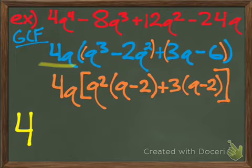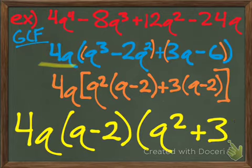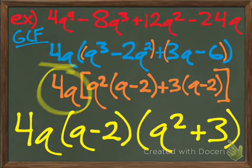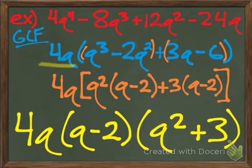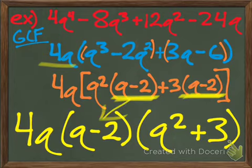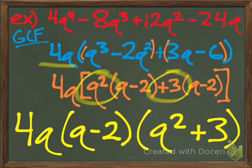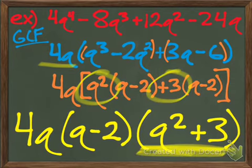Okay, so your final answer is where you take your GCF, the 4q, and you write that down first. And then you take your binomial that was repeated twice, the q-2, and you can write that down next. And then your q² and the +3, those will come together and make your last binomial q²+3.